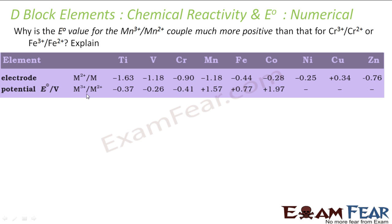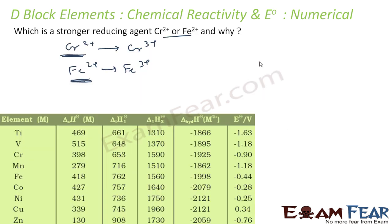Cr²⁺ to Cr³⁺ has E of plus 0.41 volt. Iron 2 plus to Iron 3 plus has E of minus 0.77 volt. If you see directly, for the reaction Cr²⁺ to Cr³⁺, this is more favorable because it emits 0.41 volt, and Iron to Iron 3 plus needs 0.77 volt. Obviously, Cr²⁺ is a better reducing agent because Cr²⁺ can easily oxidize itself.